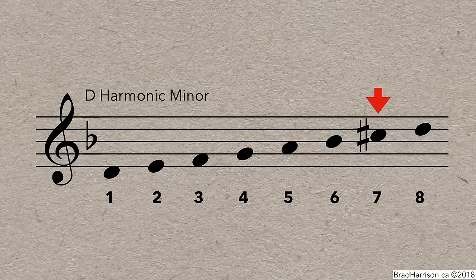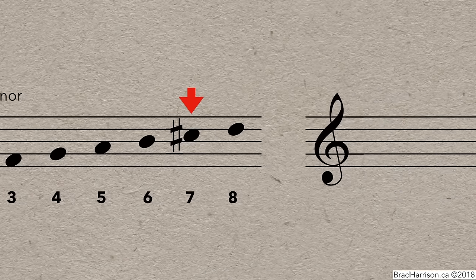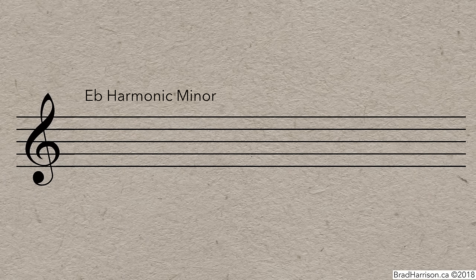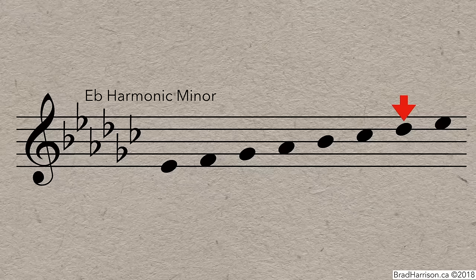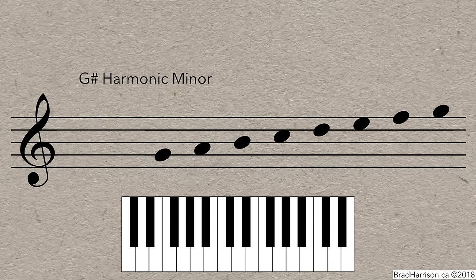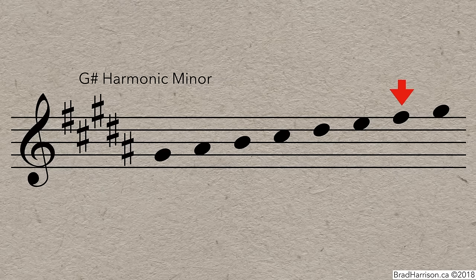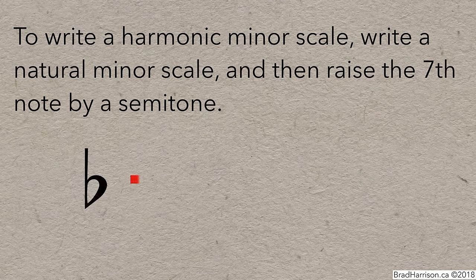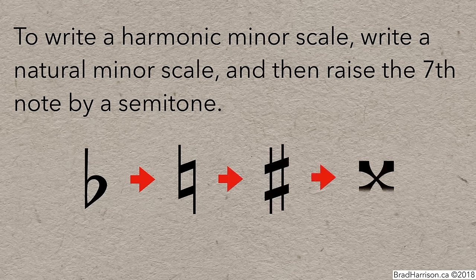Notice that in minor scales, unlike major scales, you sometimes see sharps and flats in the same scale — in this case, B flat and C sharp. The raised note isn't necessarily sharp; it might go from flat to natural, like in E flat harmonic minor. Write the notes, add the key signature from the relative major G flat major — six flats — then check the seventh note, D flat, and raise it a semitone to D natural by adding a natural symbol. For G sharp harmonic minor, the seventh is already sharp, F sharp, so we use a double sharp, which looks like an X. Summary: to write harmonic minor, raise the seventh note by a semitone — flat becomes natural, natural becomes sharp, sharp becomes double sharp.